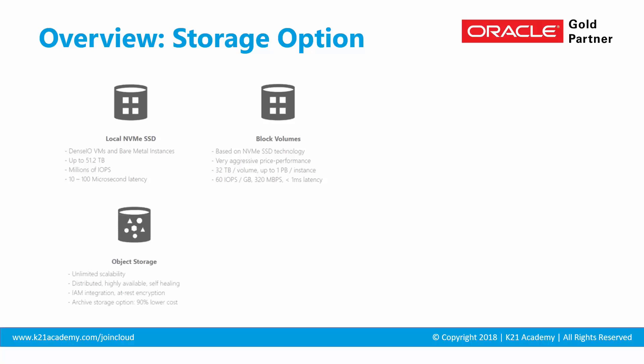The third option is object storage, which offers unlimited scalability and is available for both structured and unstructured data. Within object storage there are two tiers: hot or standard storage, and cold or archive storage. For example, your compute instance attaches a block volume for primary use, and you move backup or additional data into object storage.